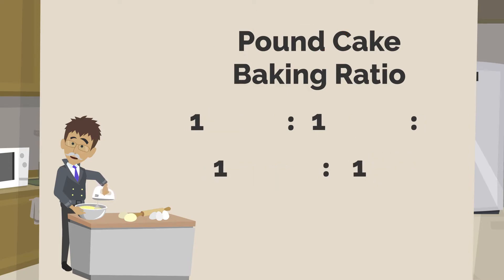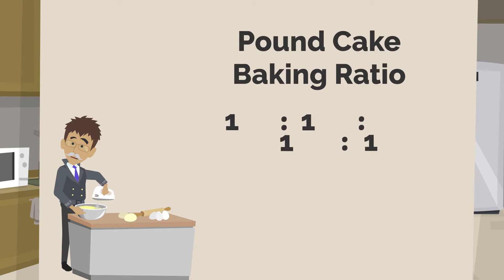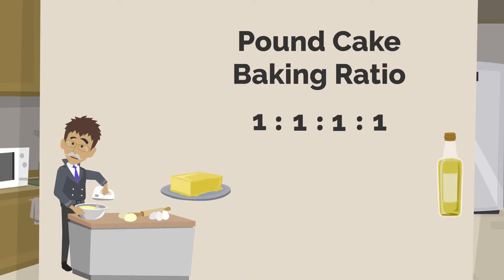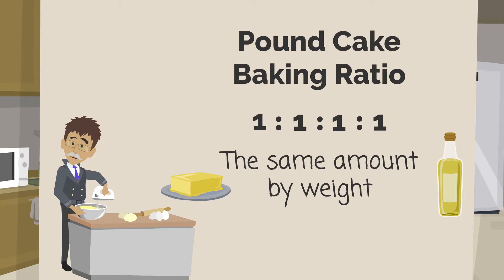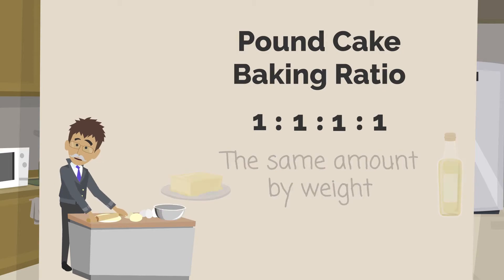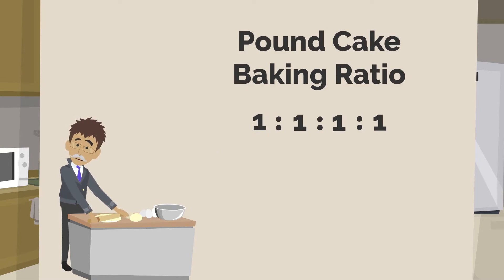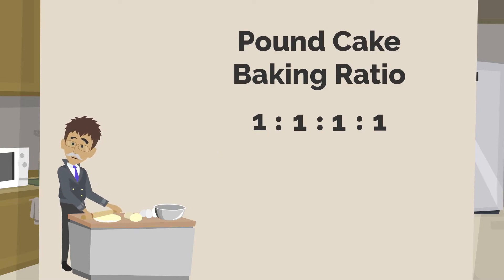This ratio can be written like this. If I wanted to reduce the amount of unhealthy fat, I could substitute a different fat for the butter in the same amount, or I could use half oil and half butter. Furthermore, if I wanted to make a smaller or larger recipe, I could adjust the amounts of the ingredients accordingly.